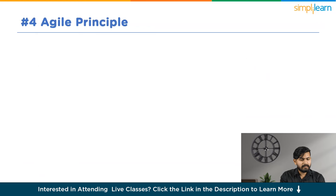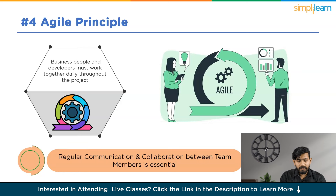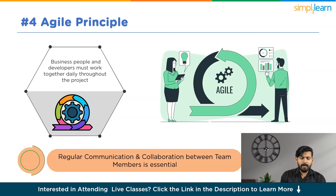Now let's discuss our fourth Agile Principle, which says that businesses, people, and developers must work together daily throughout the project. Communication is a vital element for the success of any project or team, and in Agile it is considered a daily necessity. The achievement of a successful product hinges on insights from both the business and technical facets of an organization, and this collaboration can only be achieved through consistent teamwork.